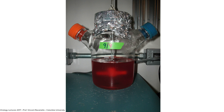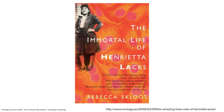We also grow cells in what we call suspension culture. Some cells can grow like this — there's a spinning magnet in the bottle run by a motor, and the cells stay in suspension. They can grow to a much higher density, like 10^5 cells per milliliter in a liter, which you can never realistically achieve in monolayer culture.